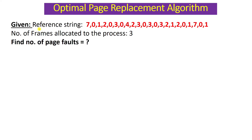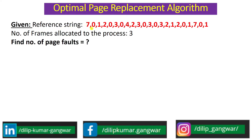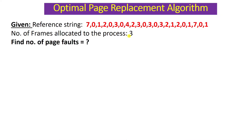We are given some information: a reference string — the group of page numbers which are asked by the CPU at different points of time — and we are given the number of free frames allocated to this process. We are allocated three frames. We have to find the total number of page faults which will be generated after the CPU references these different page numbers.